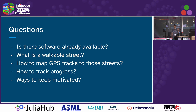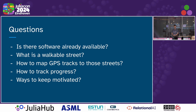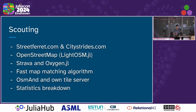The first question was whether existing software was available — not too important for me since I wanted to build my own anyway. Then, what counts as a walkable street? I don't want to walk every single path in every park, or I'll never finish this project. Another problem is that tracking GPS data when walking is easy, but mapping it to the actual street network is not. Finally, keeping motivated is important since this will take a couple of years, so I want to track progress in different ways.